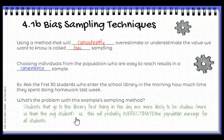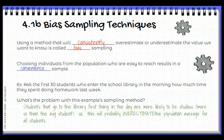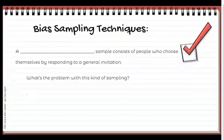Anytime you accuse something of having bias you have to say what it's going to do — is it going to overestimate the value you're looking for or underestimate it? In this case it would overestimate the average time students study because these students are probably more studious.